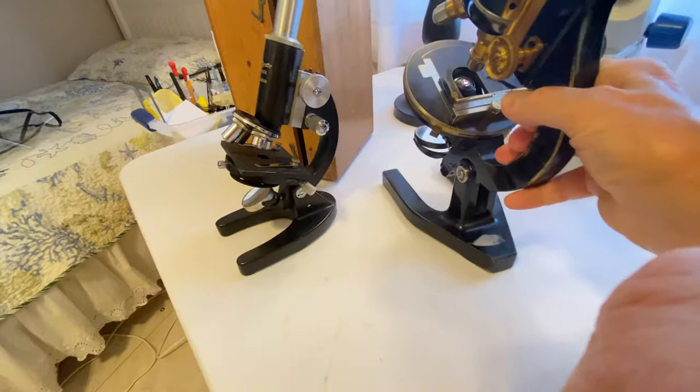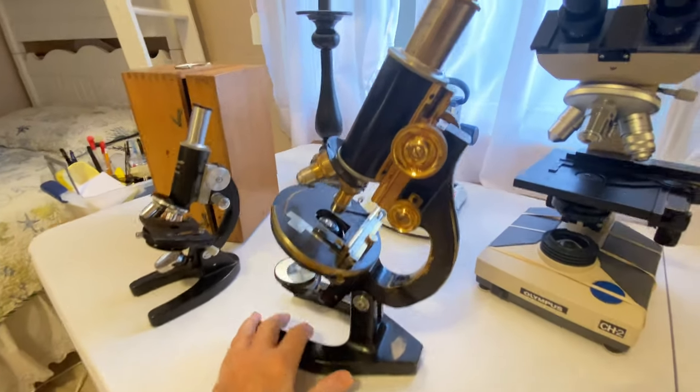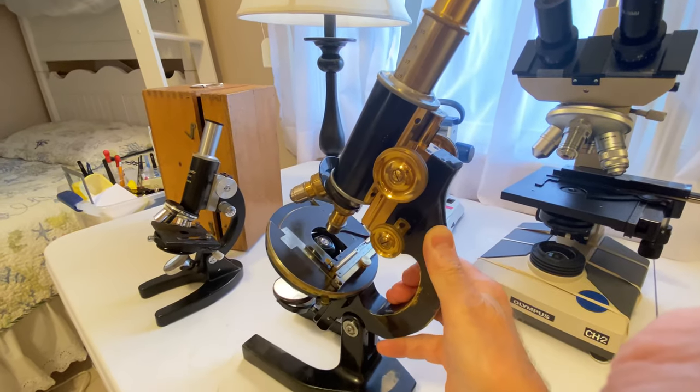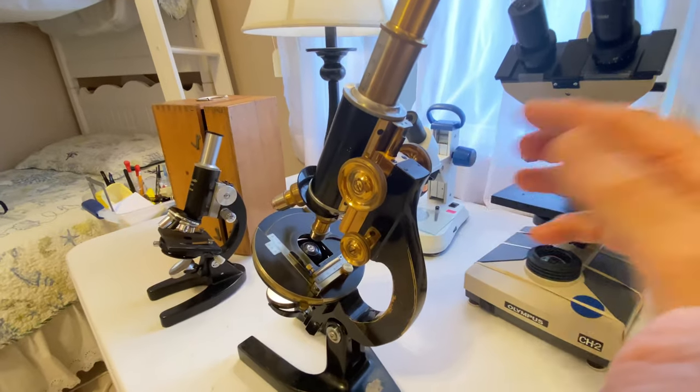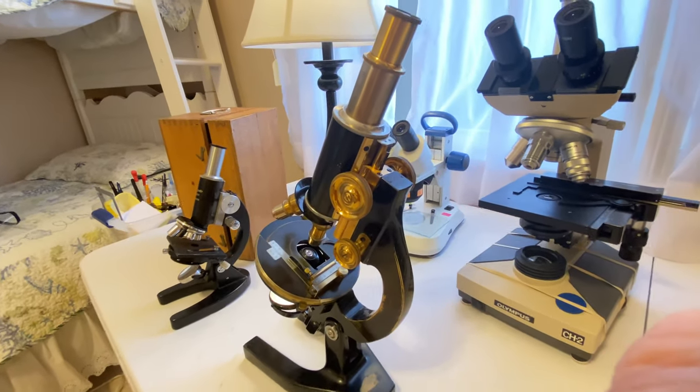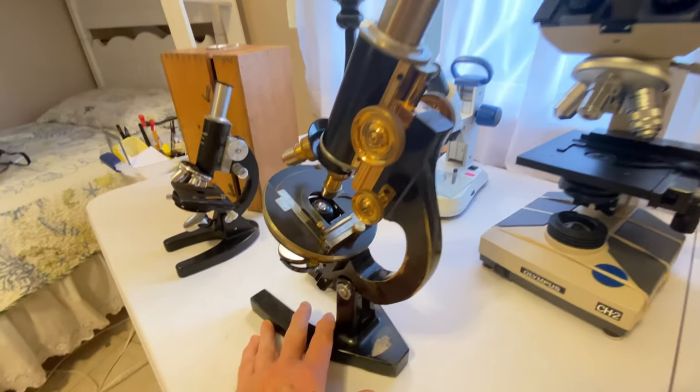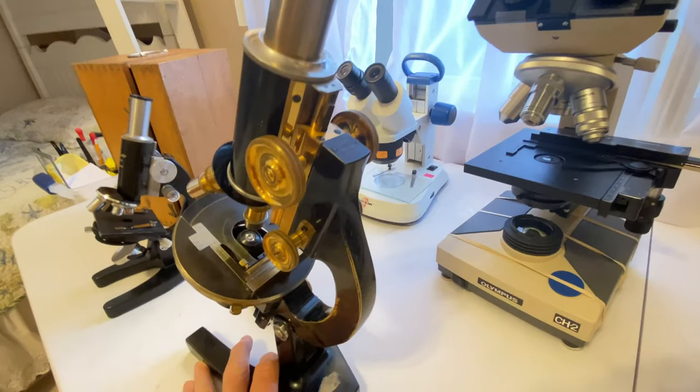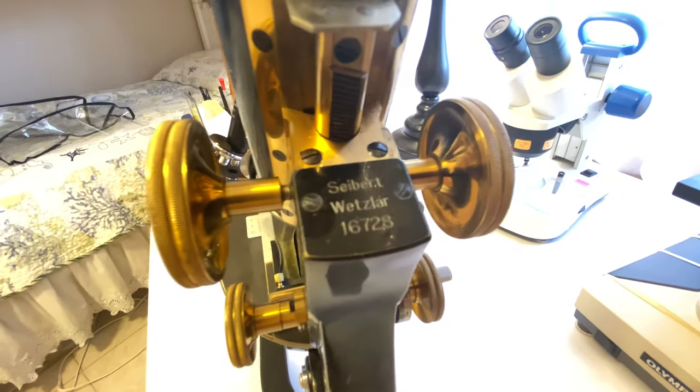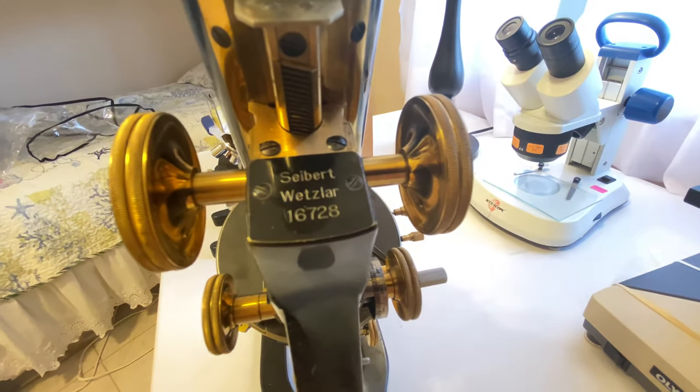And then here we have my piece de resistance. I bought this as a collector's item, actually, just as a conversation piece, because I always wanted to experience a microscope like the famous people from the 19th century, the Pasteurs and the Kochs used. And this is a Siebert Wetzlar. I don't know how old this microscope is. I believe it's anywhere from 1899 to 1910. I have been unsuccessful in being able to determine how old this microscope actually is. If anybody out there can tell me, I would be most appreciative.